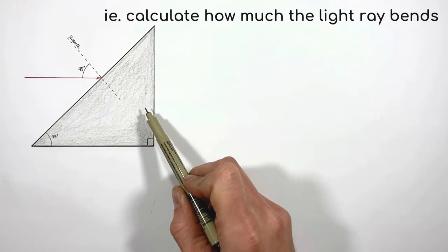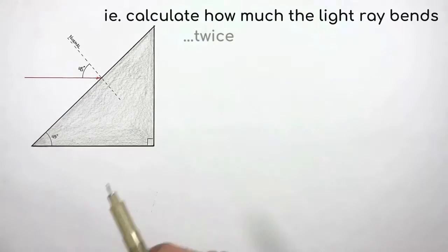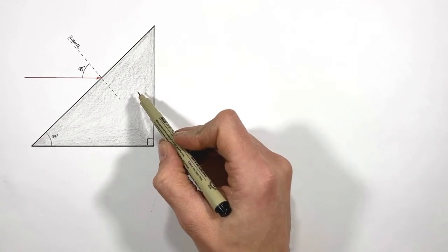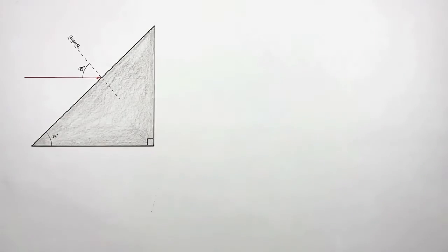And we're going to use Snell's law to solve for the direction which the light ray travels through the glass. And once we've done that, we're going to solve for the direction the light travels after it exits the glass and goes back into the air. So if we want to use Snell's law to solve this problem, the first thing we need to know is the index of refraction in both the glass and the air.